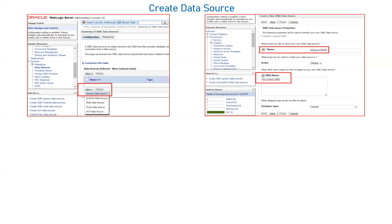Our application will connect with the database using the data source, and the application connects to the data source using JNDI. This JNDI name is defined in our application. If I have multiple data sources — 10, 20, or 40 — each gets a JNDI name, and the corresponding JNDI name is defined in my application to connect to the database. Similarly, for JMS resources like queues or topics, you define a JNDI name so the application can connect to those resources. Here I am giving the JNDI name as DizzyWorldDS.